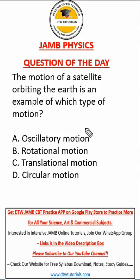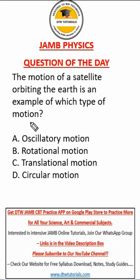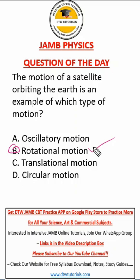Let's look at this question. This is another easy question, but very fast to fail. It says the motion of a satellite orbiting the Earth is an example of which type of motion. Most people will quickly go to rotational and tick that. But I tell you, it is absolutely wrong. The right answer here is D — it's circular motion.